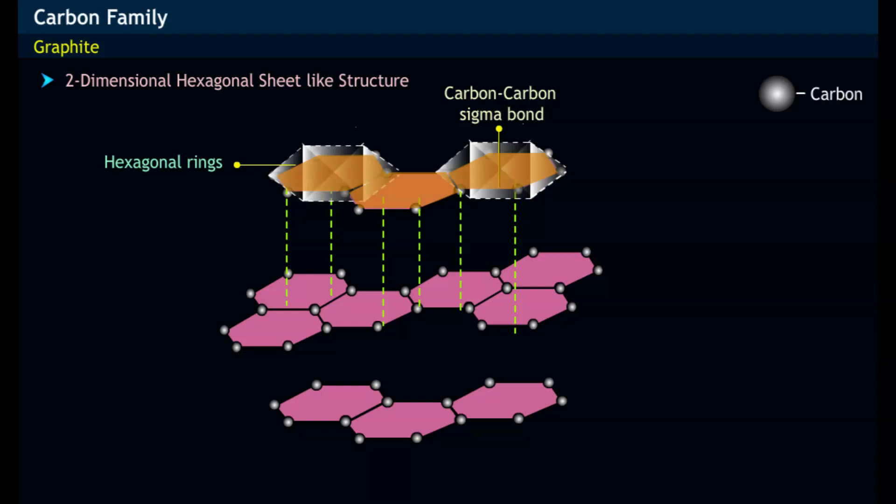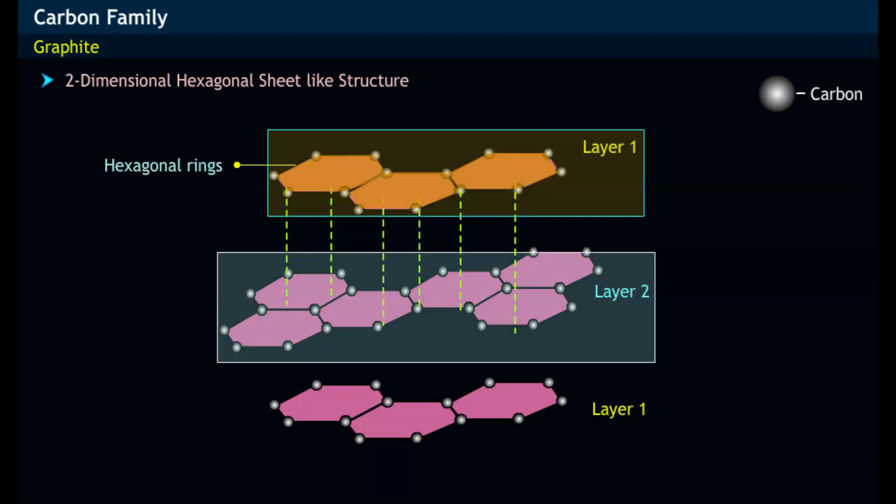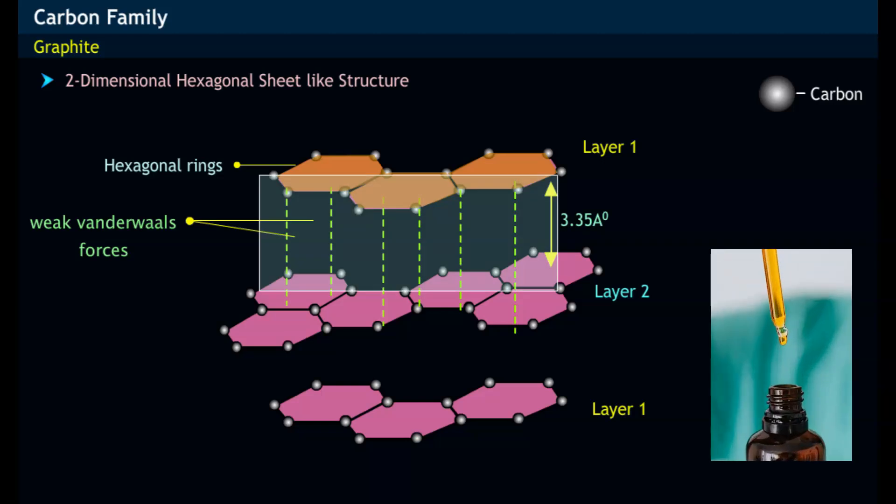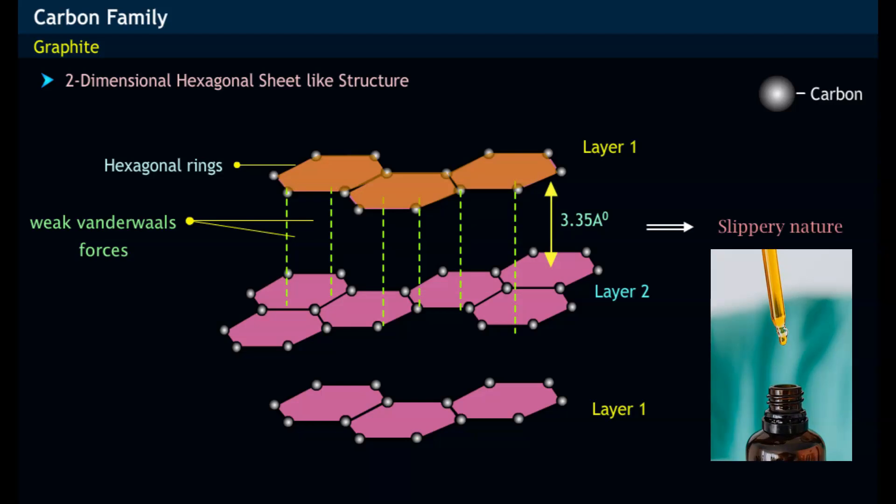The two layers of graphite are held together by van der Waals forces of attraction and are separated by a distance of 3.35 angstroms. This separation between the layers in graphite makes graphite slippery in nature.